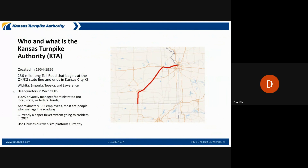Who and what is the Kansas Turnpike Authority? The turnpike was created from 1954 through 1956, which predates the interstate system in the U.S. The turnpike is a 236-mile toll road that begins at the Kansas-Oklahoma state line and ends in Kansas City, Kansas.